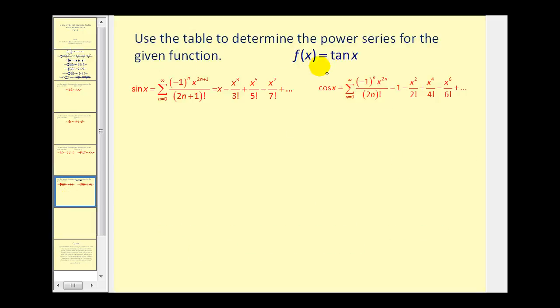If we want to determine the power series for f of x equals tangent x, we can use the fact that tangent x is equal to sine x divided by cosine x. And since we have a power series for sine x and a power series for cosine x, we're going to take this power series and divide by this power series using long division. Let's go ahead and set this up.